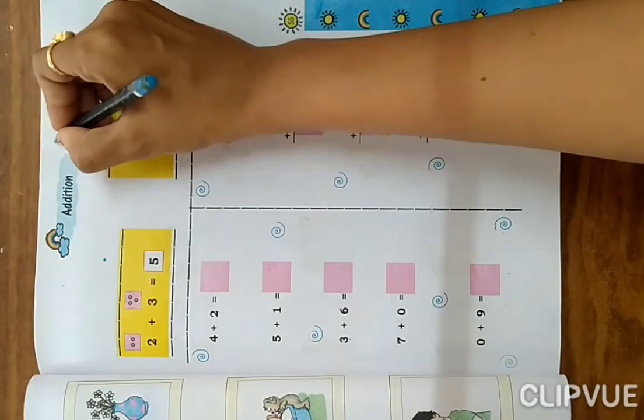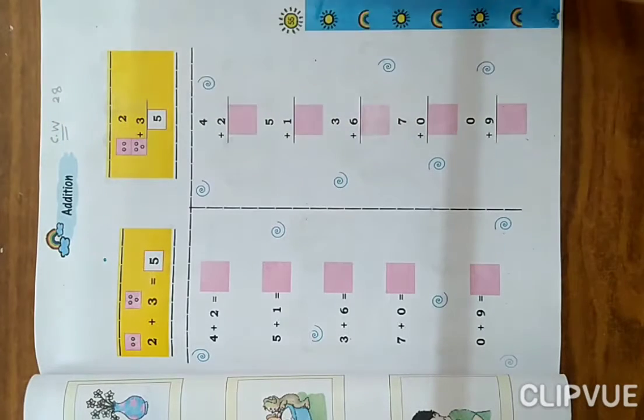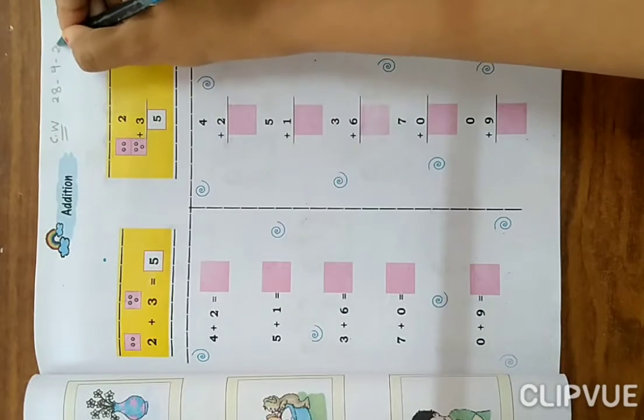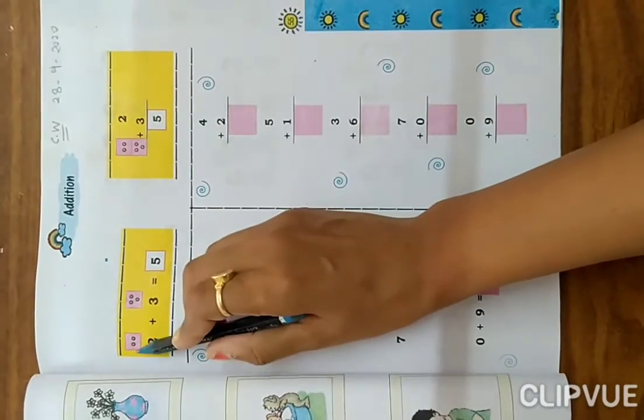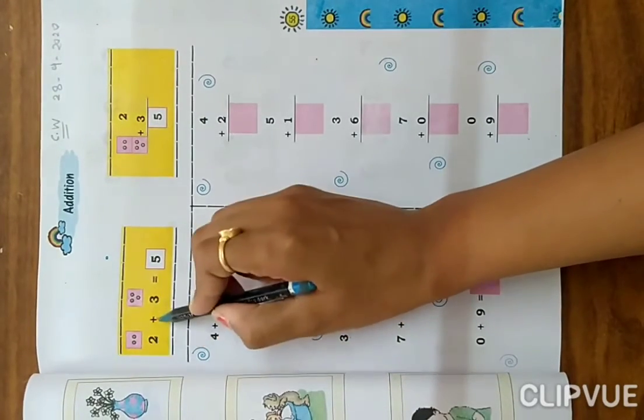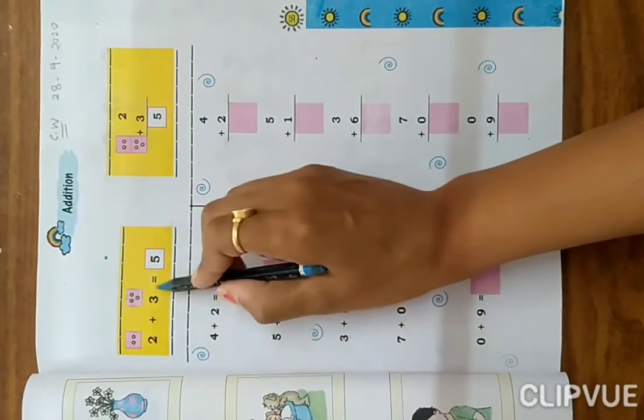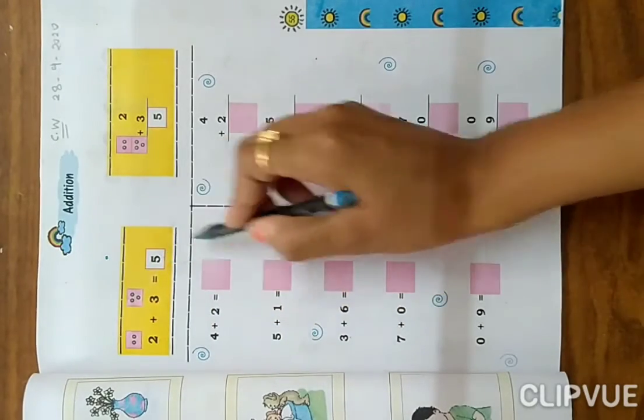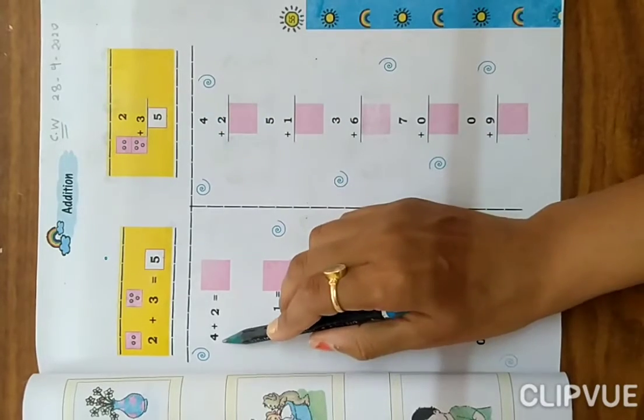Now page number 55. Page number 55, here also write down CW and today's date, 28 September 2020. Now look at your example: 2 plus 1, 2 plus 1, 2 and 3, so total 5. Here 2 plus 3, 5. Same.